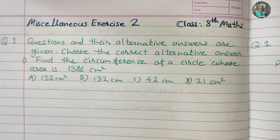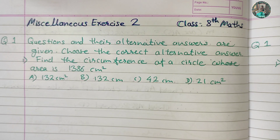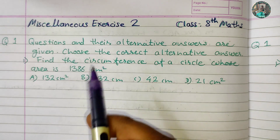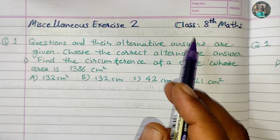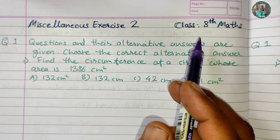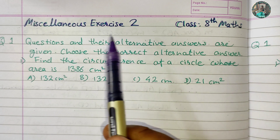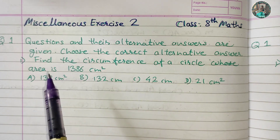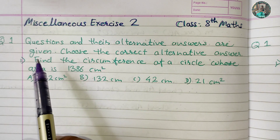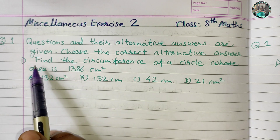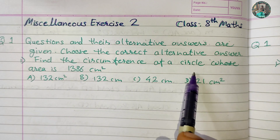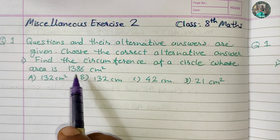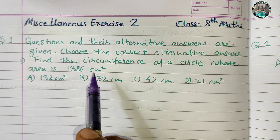Welcome to the Sapna's Home Screen channel. Dear friends, today we are going to solve question 1 from the miscellaneous exercise 2 from the class 8 mathematics. Find the circumference of a circle whose area is 1386 cm².